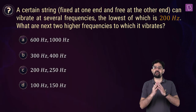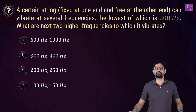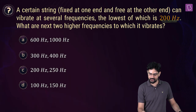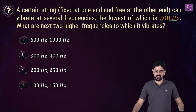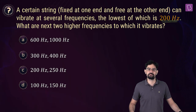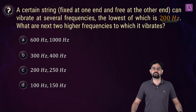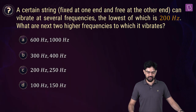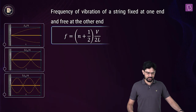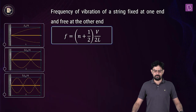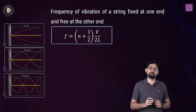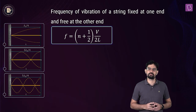The fundamental frequency of a string fixed at one end and free at the other is given as 200 Hz. We need to find the next two higher frequencies — its first and second overtones. For this case, the frequencies are given by f = (N + 1/2) × V/(2L), and the fundamental is obtained by putting N = 0, giving f = V/(4L).